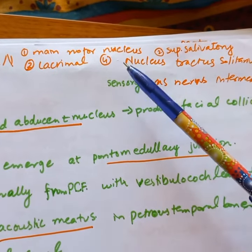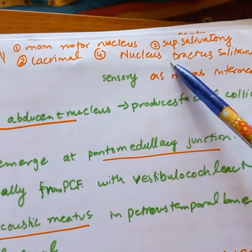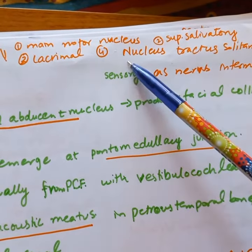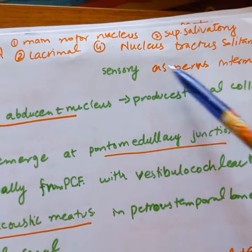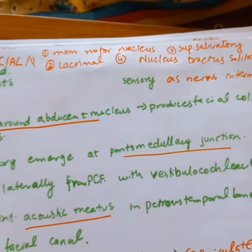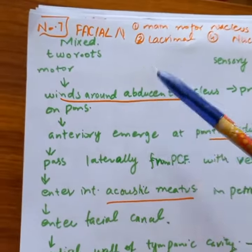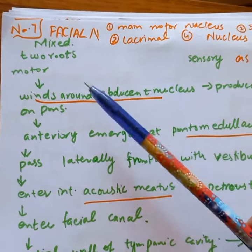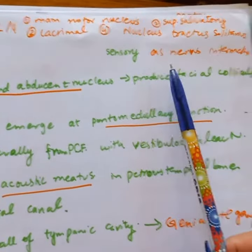Nucleus Tractus Solitarius is shared by cranial nerves 9, 10, and 7. A mnemonic: N for 9, T for 10, S for 7 — these three share the Nucleus Tractus Solitarius. The facial nerve has two roots: a motor root and a sensory root, which we have as the nervus intermedius.